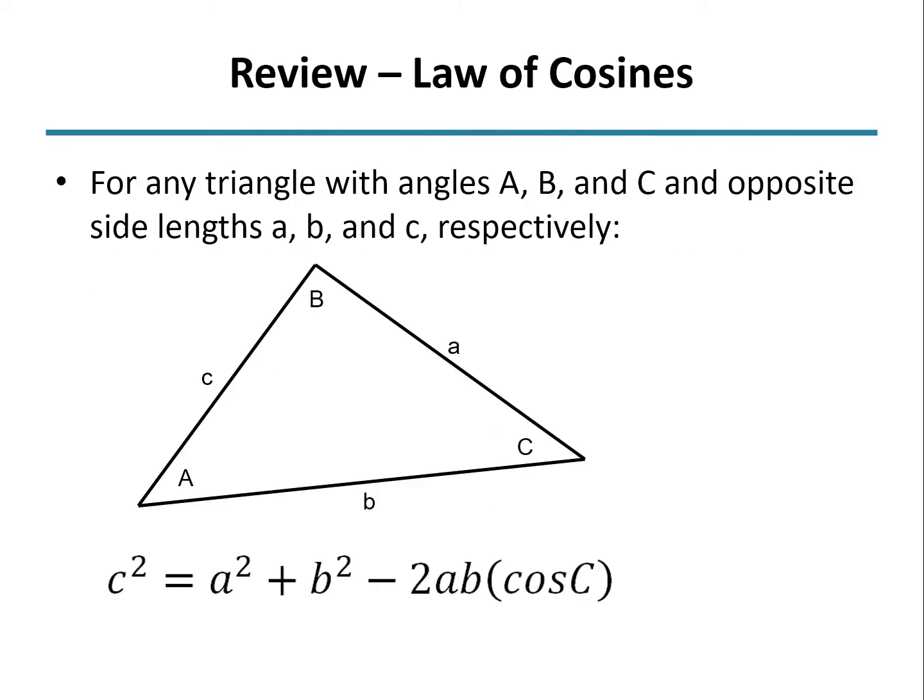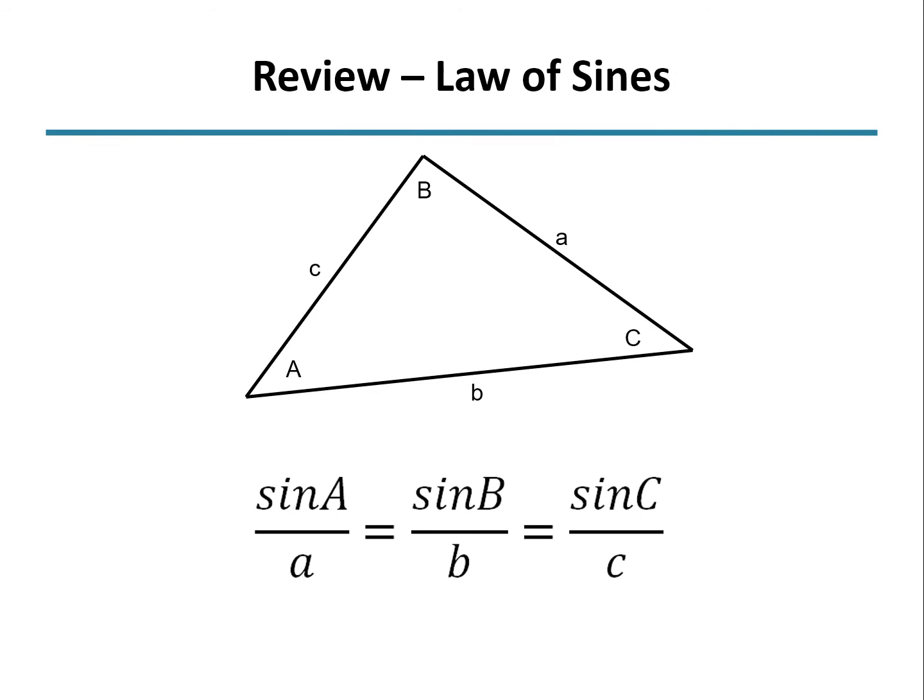To solve vector equations graphically, we need to remember the law of sines and the law of cosines. For the law of cosines, if you start with the Pythagorean theorem, you would say C squared equals A squared plus B squared. However, if the opposite angle to side C is not a right angle, you have to add this term: minus 2AB times the cosine of C. The law of sines just says that the sine of an angle over its opposite side is the same for all three sides and angles of a triangle.